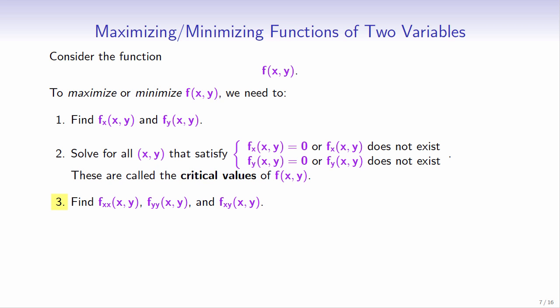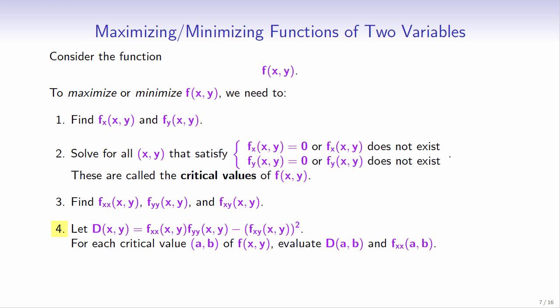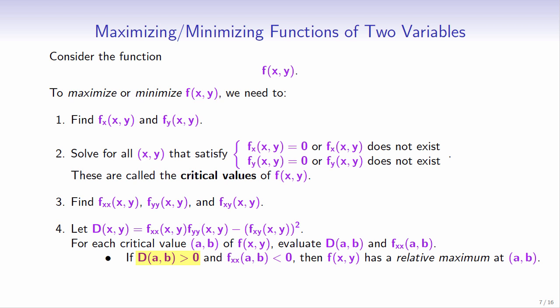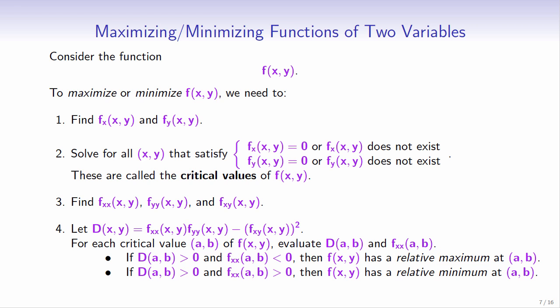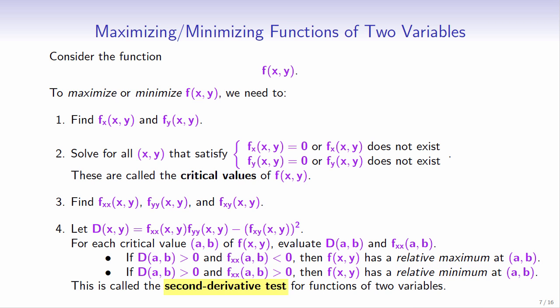Step 3: Find the second order partial derivatives of f. Step 4: Let d be a function of x and y such that d equals fxx times fyy minus fxy squared. Note that fxx is the second order partial derivative of f with respect to x twice. Evaluate d and fxx for each critical value. If d is positive and fxx is negative, then f has a relative maximum. If fxx is positive, then f has a relative minimum. This is called the second derivative test.